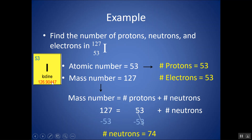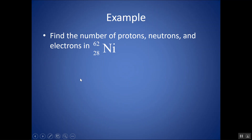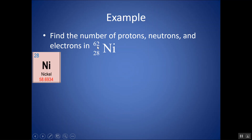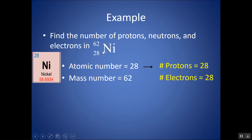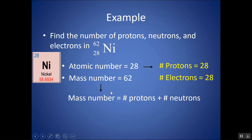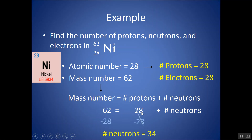Find the number of protons, neutrons, and electrons in nickel with a mass number of 62 and an atomic number of 28. All the information is right here in the symbol. There are 28 protons, and 28 electrons since that's the atomic number and the atom is neutral. Taking the mass number 62 and subtracting out the protons gives 34 neutrons.